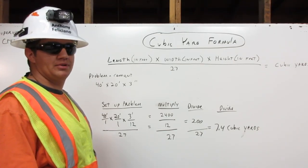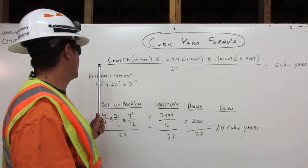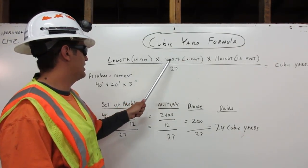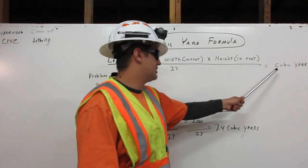With an example, let me show you. The formula is length in feet times width in feet times height in feet over 27. That equals cubic yards.